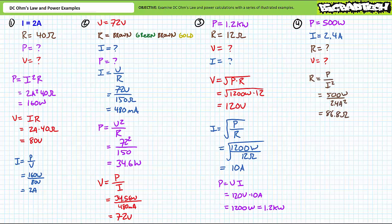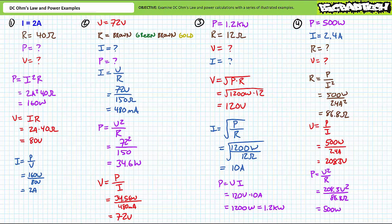Our fourth problem features an element known to be dissipating 500 watts of power and experiencing 2.4 amps of current. We're being asked to solve for the resistance and the voltage drop across it. Resistance is equal to power divided by current squared. Substituting in our given values yields a resistance of approximately 86.8 ohms. Voltage is equal to power over current. Substituting in our given values yields a voltage of approximately 208.3 volts. A supporting calculation verifies this result, where power is equal to voltage squared divided by resistance. Substituting in our calculated values does indeed yield 500 watts of power.